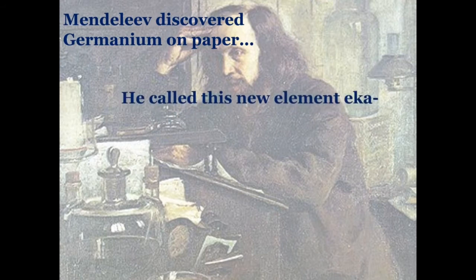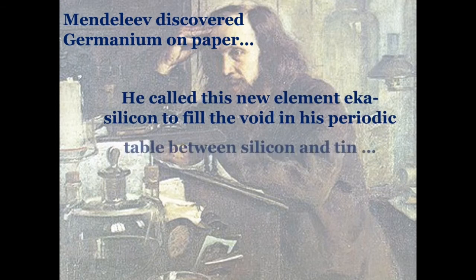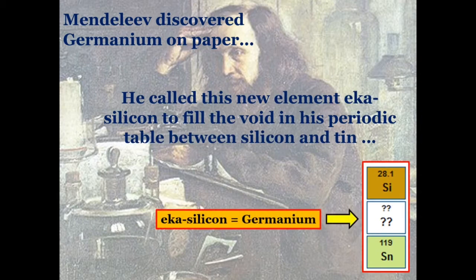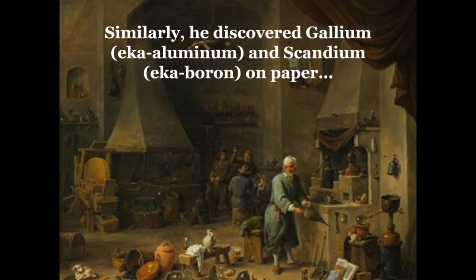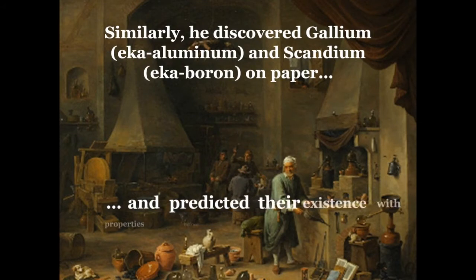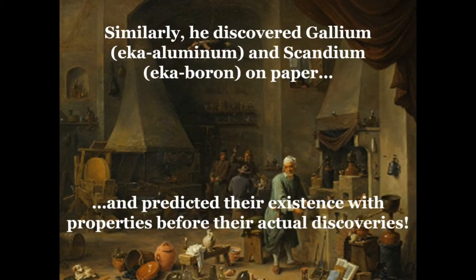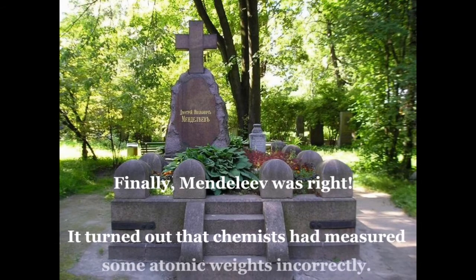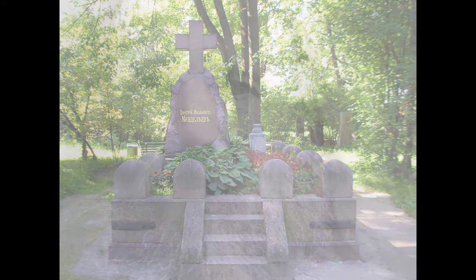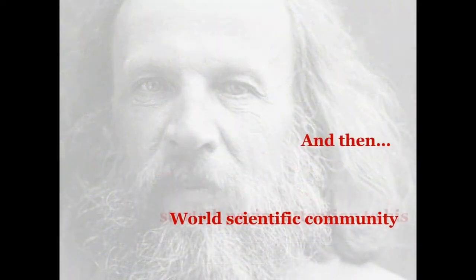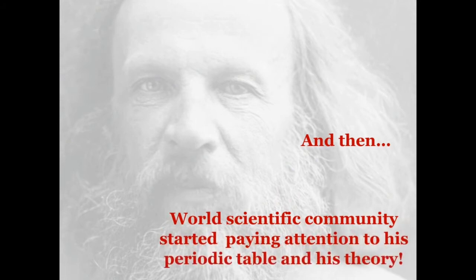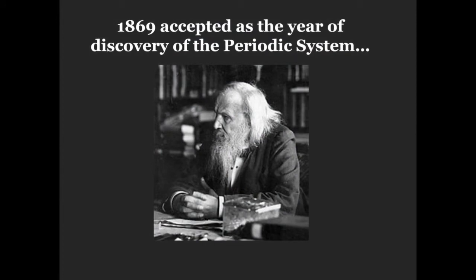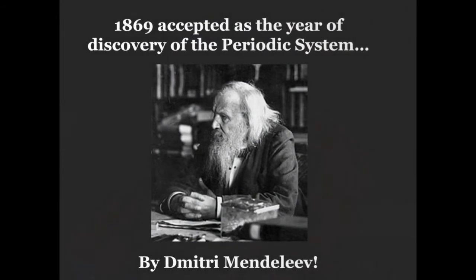Mendeleev discovered germanium on paper — he called this new element eka-silicon to fill the void in his periodic table between silicon and tin. Similarly, he predicted gallium as eka-aluminium and scandium as eka-boron on paper, and predicted their properties before their actual discoveries. Finally, Mendeleev was proven right. It turned out that chemists had measured some atomic weights incorrectly, and the world scientific community started paying attention to his periodic table and his theory.